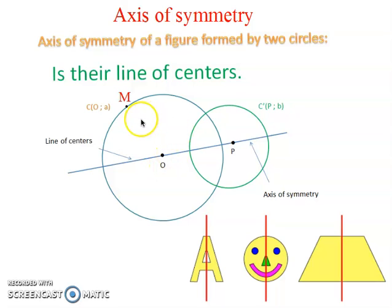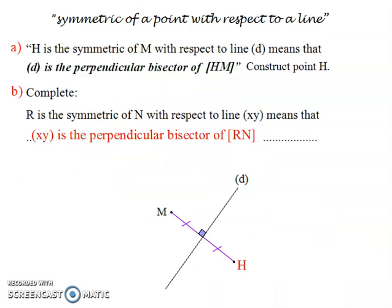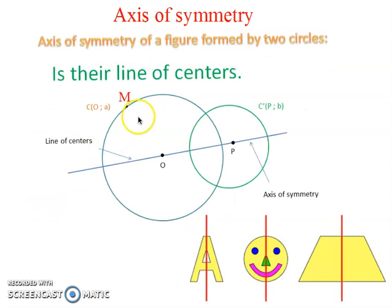If they ask me to find the symmetric of M with respect to OP, we apply the method we discussed. To find the symmetric of M with respect to a line, we agreed it should be the perpendicular bisector of the segment. We draw a perpendicular and extend it. Here I want to make the symmetric of M with respect to OP. From M, I draw a perpendicular to OP and extend it to the other side to get point S, which is the symmetric of M with respect to OP.